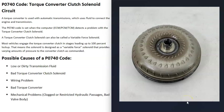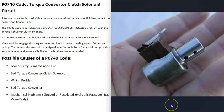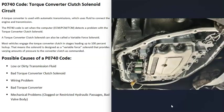The torque converter connects the engine to the transmission. It's located right in front of the transmission, connected to the shaft going into it and bolted to the engine. This is where power from the engine is transferred to the transmission, and the computer controls this with a torque converter clutch solenoid — a small solenoid the computer sends a signal to.